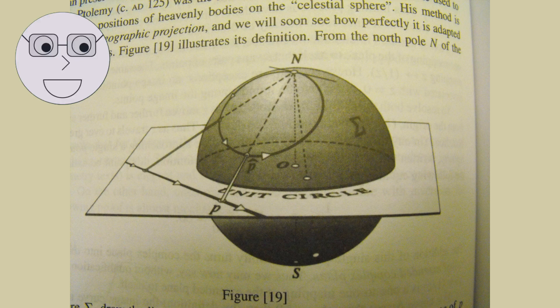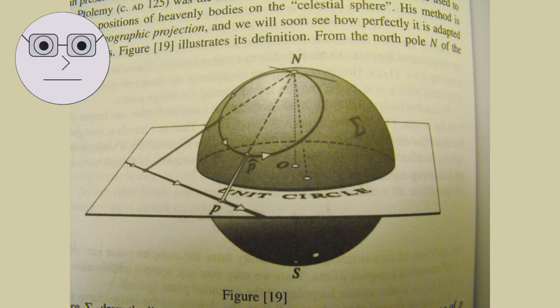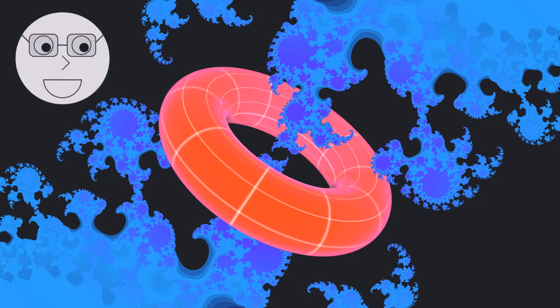There are several types of Riemann surfaces, each with its own unique properties. The most basic type of Riemann surface is the Riemann sphere, which is a one-dimensional complex manifold that can be visualized as a sphere. Another type of Riemann surface is the elliptic curve, which is a two-dimensional complex manifold that can be visualized as a torus. Elliptic curves have important applications in cryptography and number theory.